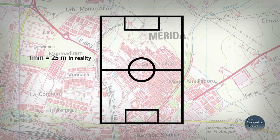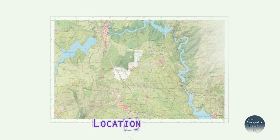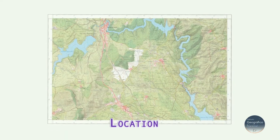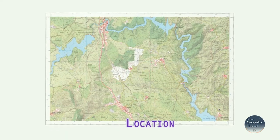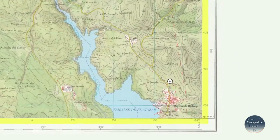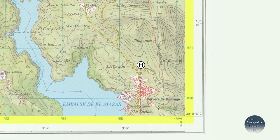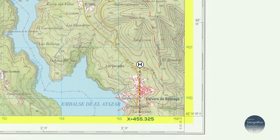A football pitch will be represented on paper as a rectangle 4 millimetres long by 2 millimetres wide. The position of any object on Earth is defined by coordinates.